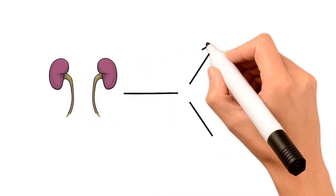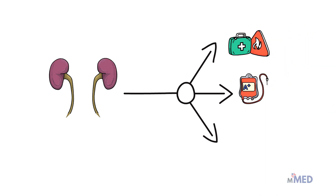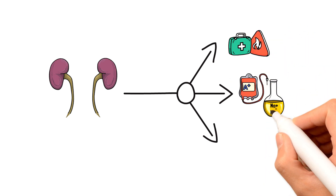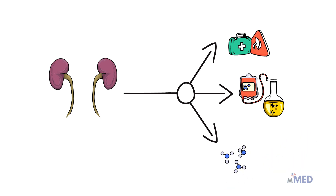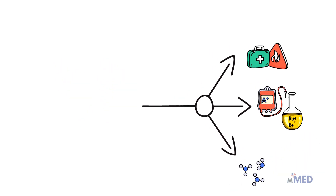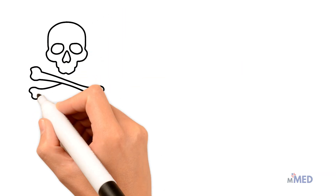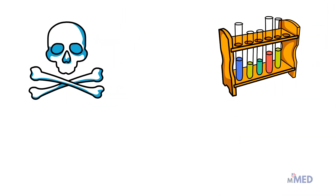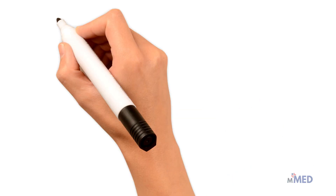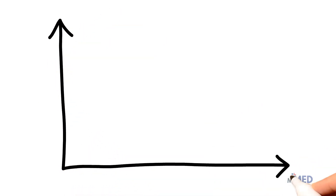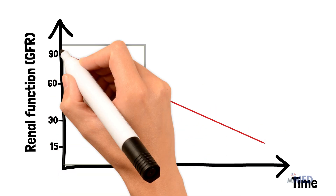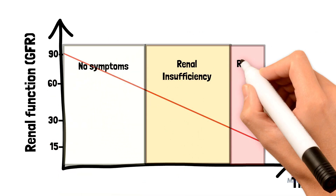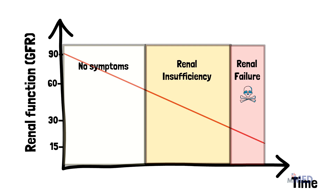Because the kidneys remove metabolic waste, control blood pH, and regulate fluid and electrolyte balance as well as produce several hormones, loss of kidney function results in the accumulation of toxic waste, electrolyte imbalances, and a number of other health problems. The disease develops slowly over time, progressing from renal insufficiency to end-stage renal failure. Often, initial loss of renal tissue does not show any symptoms, and symptoms typically appear when a significant portion of kidney function is already lost.